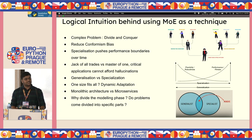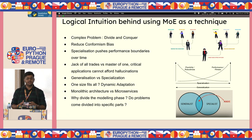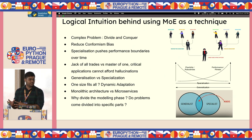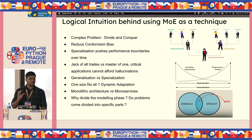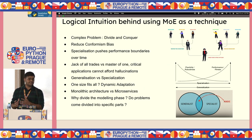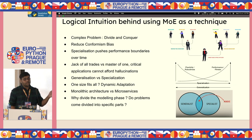Before understanding mixture of experts, let's understand the intuition behind why we've reached a point where we need it. Why does a large organization have the hierarchy it has? Startups usually start with a flat hierarchy, but beyond a certain scale, they undergo a transformation. The answer is purely specialization — you need teams that are super specific and accurate at solving specific problems with the highest accuracy because we cannot compromise on quality. It's a divide and conquer strategy.